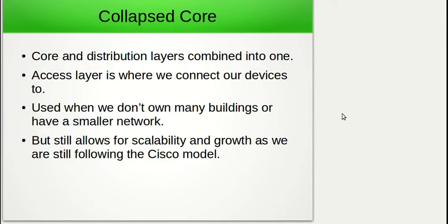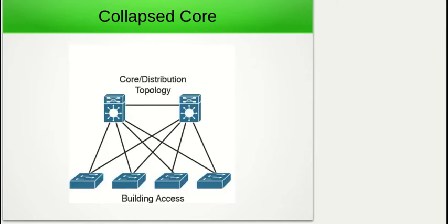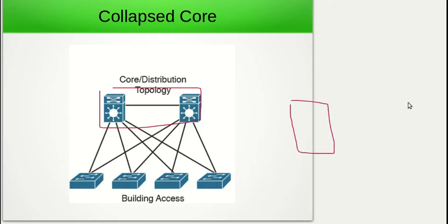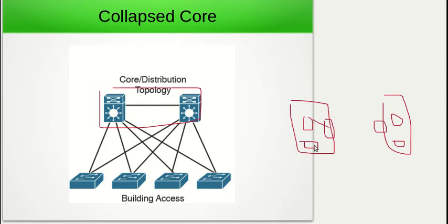The other model we can have is known as the collapsed core, which is normally used when we have a smaller network but we still want scalability, growth, and to follow the Cisco model. Essentially, the core and distribution layers are combined into one. With the collapsed core model, this single combined layer performs the function of connecting our buildings together as well as forwarding traffic between our access layer switches. This can be used when we only have two buildings — the access layer switches connect to the distribution layer switches allowing redundancy and communication, but the distribution layer switches also have links to each other to connect our buildings together.